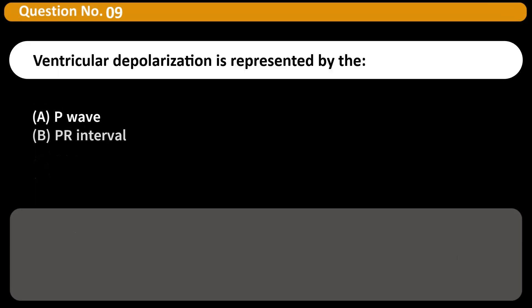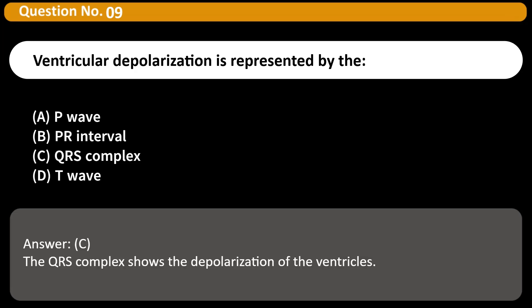Ventricular depolarization is represented by the A. P wave B. PR interval C. QRS complex D. T wave Answer C. The QRS complex shows the depolarization of the ventricles.